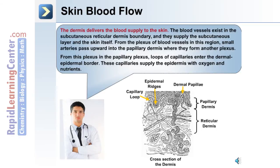Skin blood flow: The dermis delivers blood to supply the skin, including the dermis and the epidermis. The blood vessels exist at the subcutaneous-reticular dermis boundary and supply the subcutaneous layer and the skin itself. From the plexus of blood vessels at this boundary, small arteries pass upward into the papillary dermis, where they form another blood vessel plexus. From this plexus in the papillary area, loops of capillaries enter the dermal-epidermal border, existing in the dermal papillae and supplying the epidermis with oxygen and nutrients.